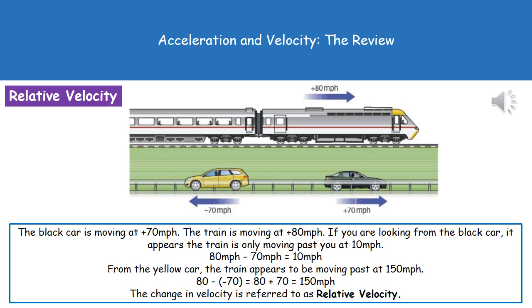The last thing we need to understand is something called relative velocity. This is something you may well have noticed when you've been sitting in a car on the motorway. Anything that's overtaking you going the same direction seems to do so really quite slowly. Whereas anything going in the opposite direction seems to whiz past really fast. This is all down to relative velocity.